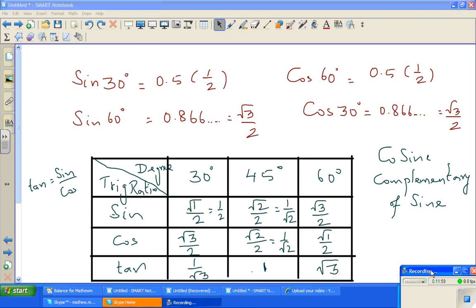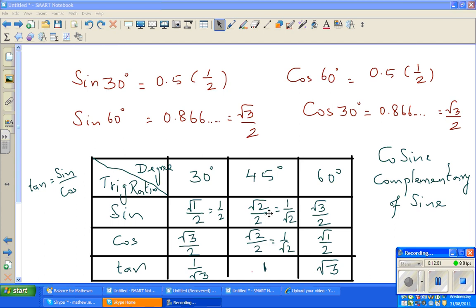I'll continue this in the next video. I'll explain how these values come. But for the sake of remembering, it's very easy. Square root of 1 over 2, square root of 2 over 2, square root of 3 over 2. And this is the other way around. See you in the next video. Thank you.